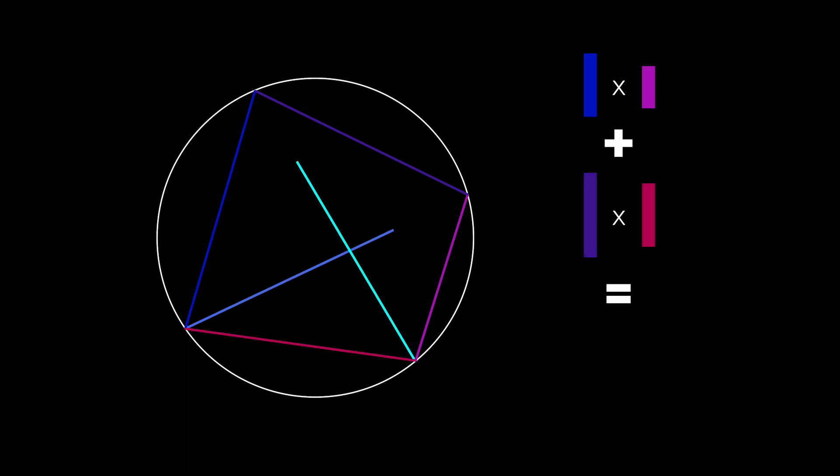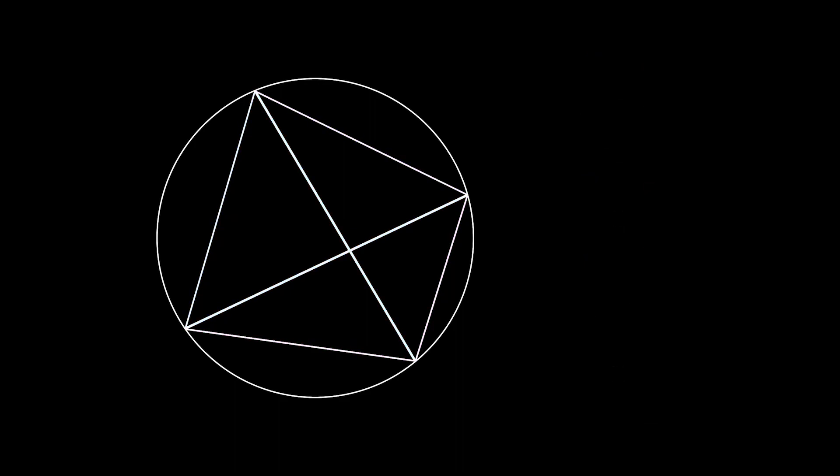According to the theorem, the product of one pair of opposite sides plus the product of another pair of opposite sides is equal to the product of the length of the diagonals. In other words, for any cyclic quadrilateral ABCD, AB times CD plus AD times BC is equal to AC times BD.